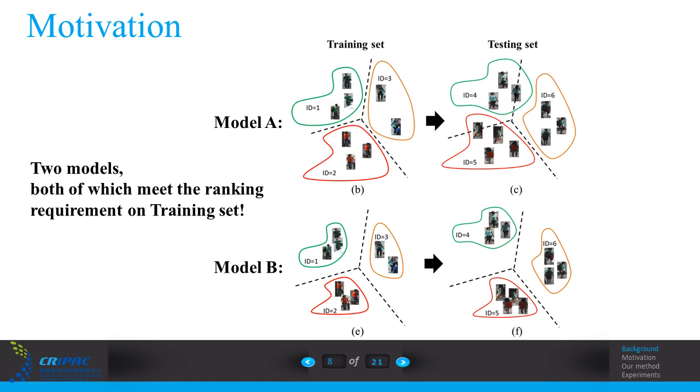model A works bad on testing set, while model B is still good. This is because the model A produces larger interclass variance and smaller intraclass variance.